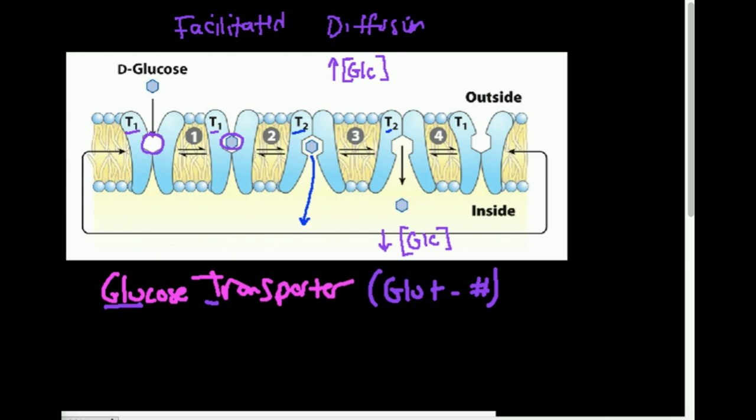Glucose binds in this pocket. That induces the change in conformation to T2. And then glucose just simply exits to the side of lower concentration. And now that glucose is out of this pocket, it now returns to its original conformation, T1. So what exactly is happening? Let's regroup this and go over it.